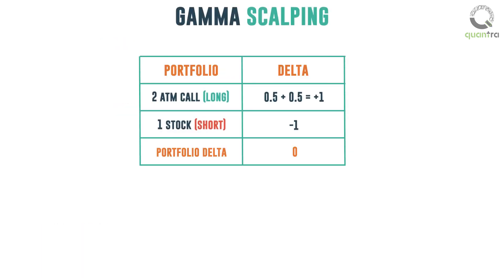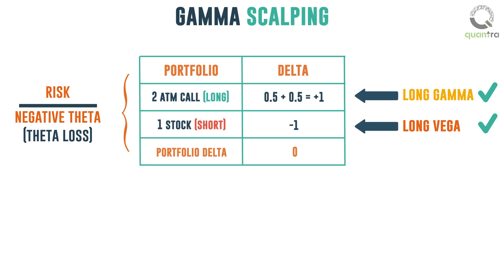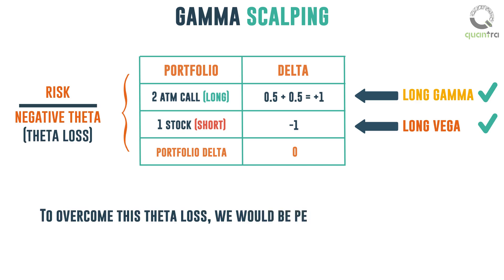Hence, we have a long Gamma, long Vega view of our portfolio, and the risk we would be facing holding the long call would be the Theta loss, since the long call Theta is negative. To overcome this Theta loss, we would be performing Gamma Scalping.